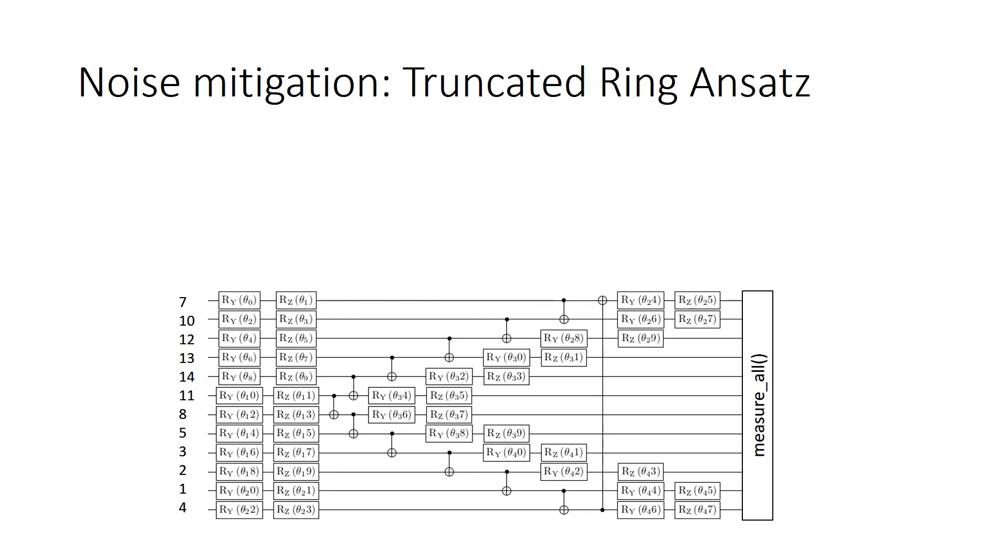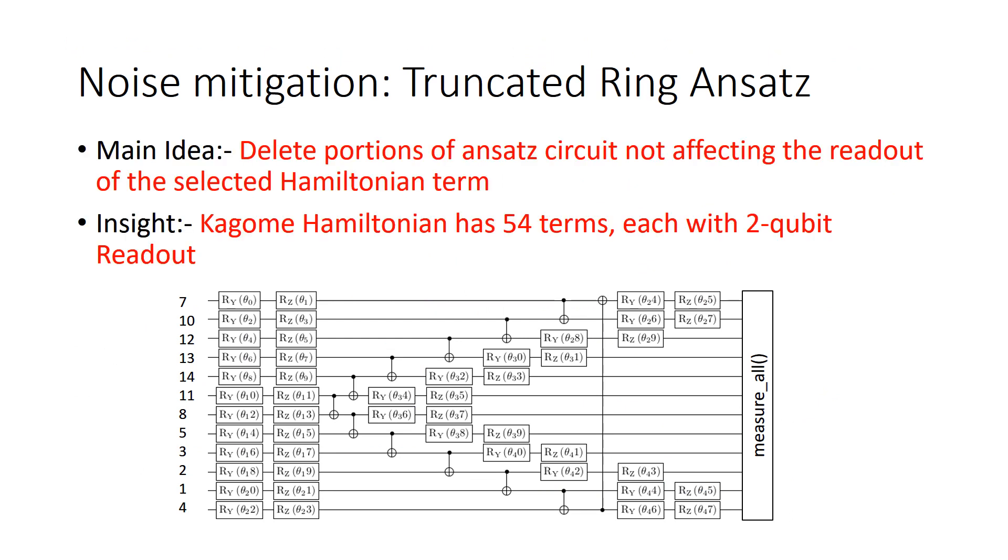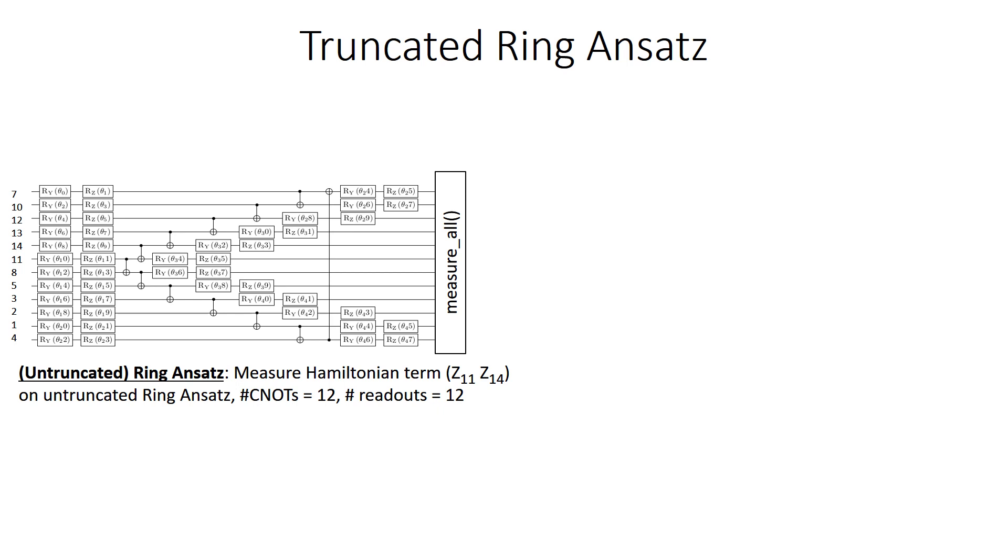With the help of ring ansatz, again, the main idea shown here is that we will actually customize circuits for each Hamiltonian term. So if there are 54 terms, then there are going to be 54 different truncated ansatz circuits. Here is an example of the truncated ring ansatz circuits derived from the untruncated version if we wish to measure the Hamiltonian term Z11 and Z14.